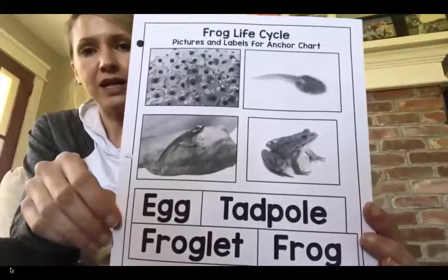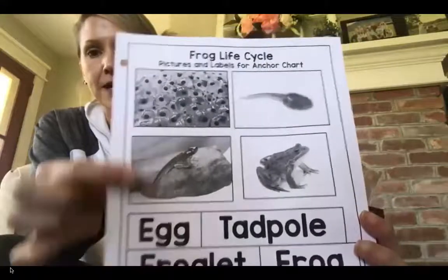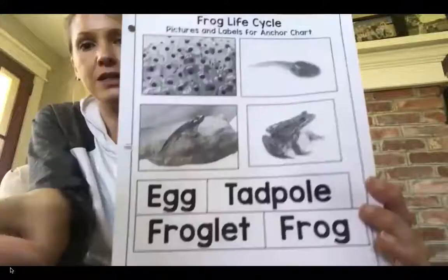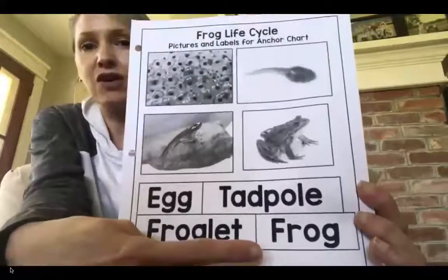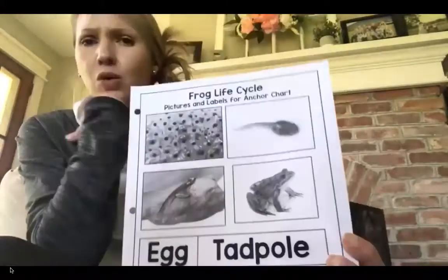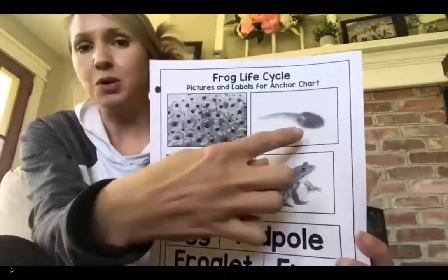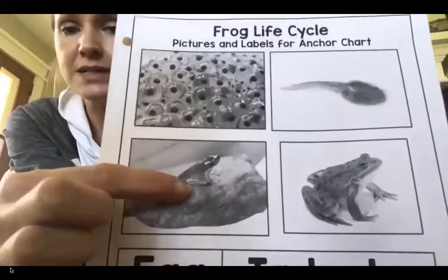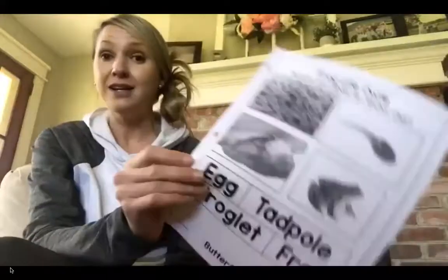Let's look at these pictures and see if you can figure out which one goes where. The egg — which picture would be the egg? These blobs right here. Tadpole — which one would go with tadpole? This one up here. Froglet — ooh, what do you think a froglet would be? A baby frog. And then frog — this would be our frog. So the order is: eggs first, then the tadpole comes out, the tadpole grows up to be a froglet — you can see it still has its tail and some legs — but then it keeps growing and changes into a frog. That is the life cycle of the frog.